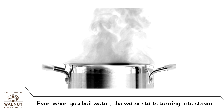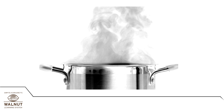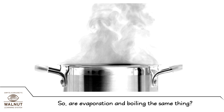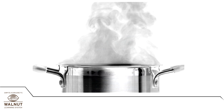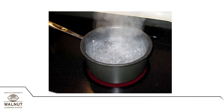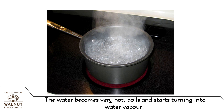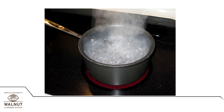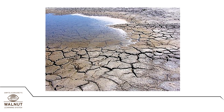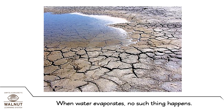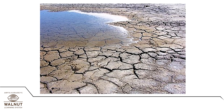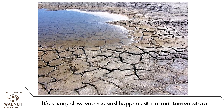Even when you boil water, the water starts turning into steam. This steam is also water vapor. When we boil water, first we start seeing bubbles. The water becomes very hot, boils, and starts turning into water vapor. We can see the steam coming out. When water evaporates, no such thing happens. There are no bubbles and you can't see the vapor forming. It's a very slow process and happens at normal temperature.